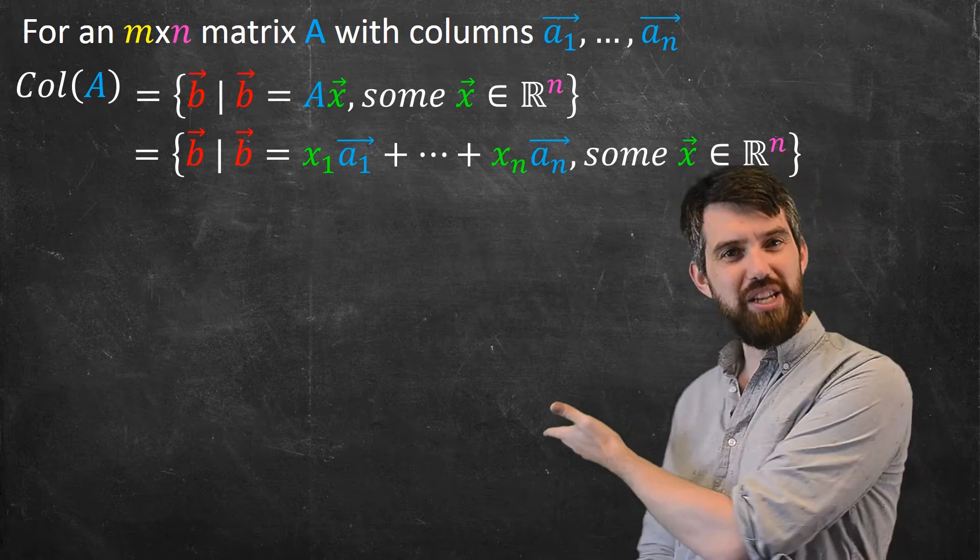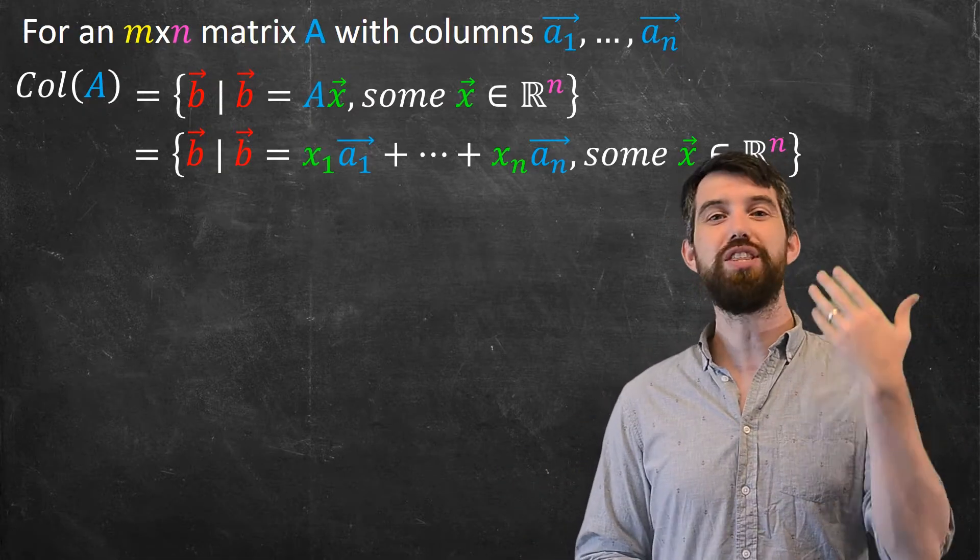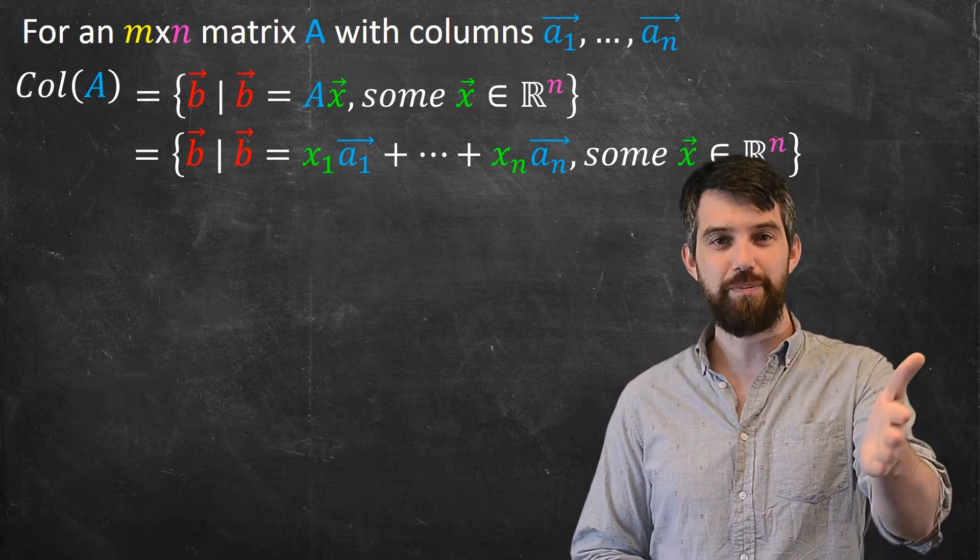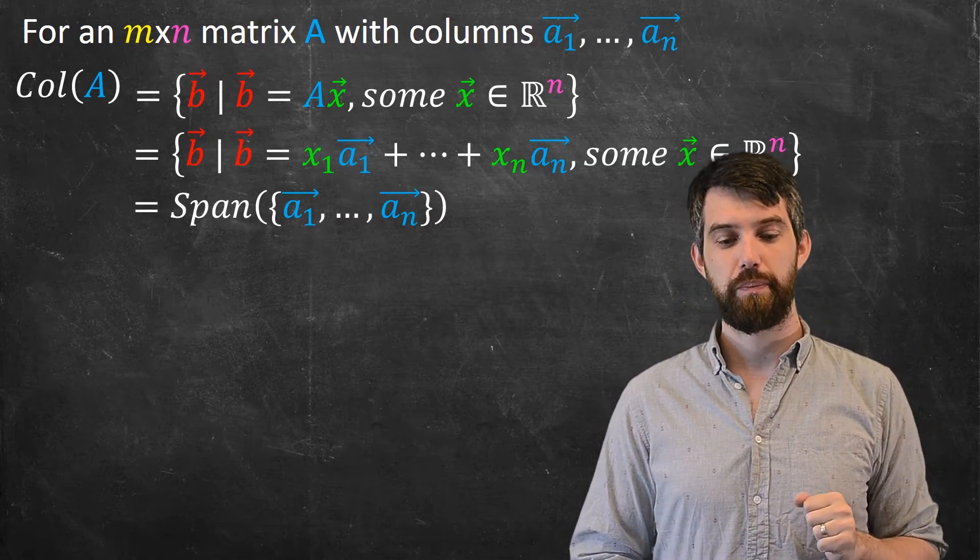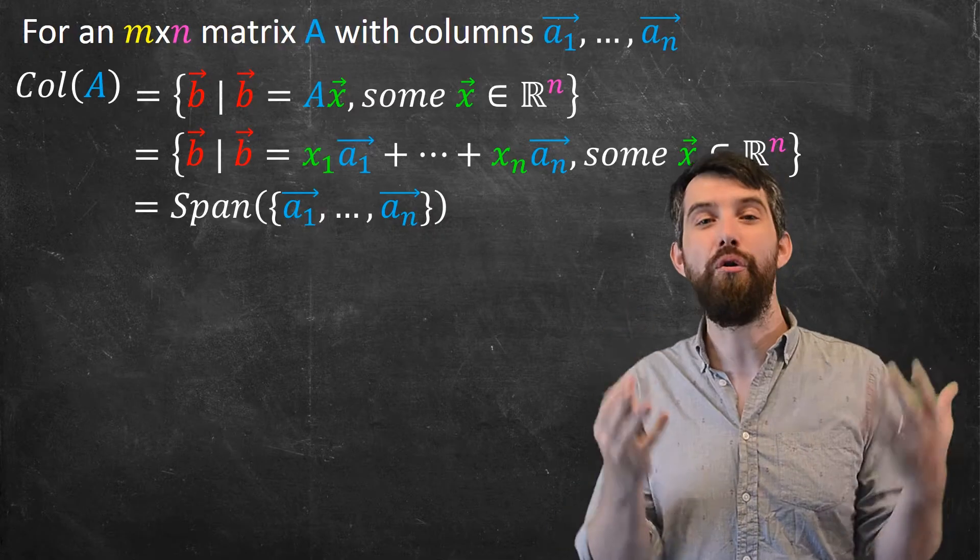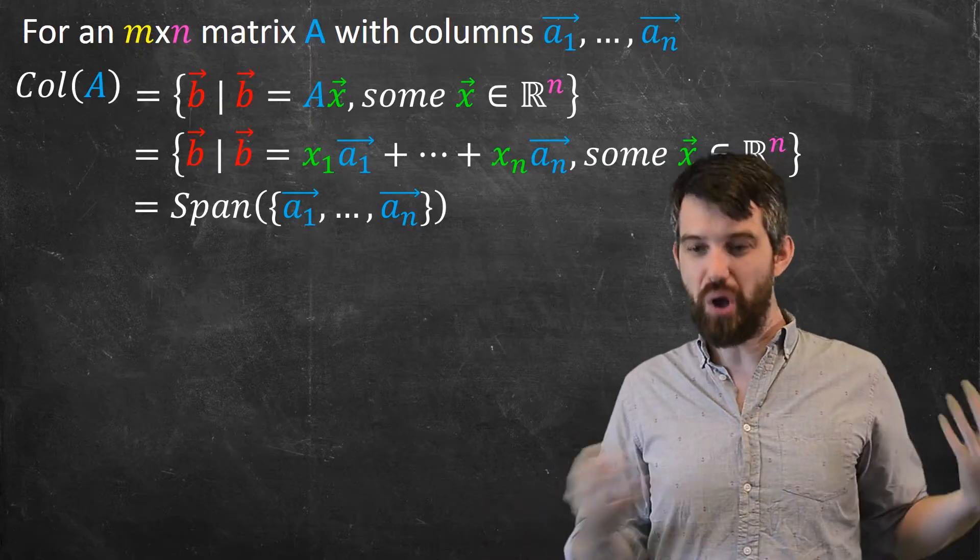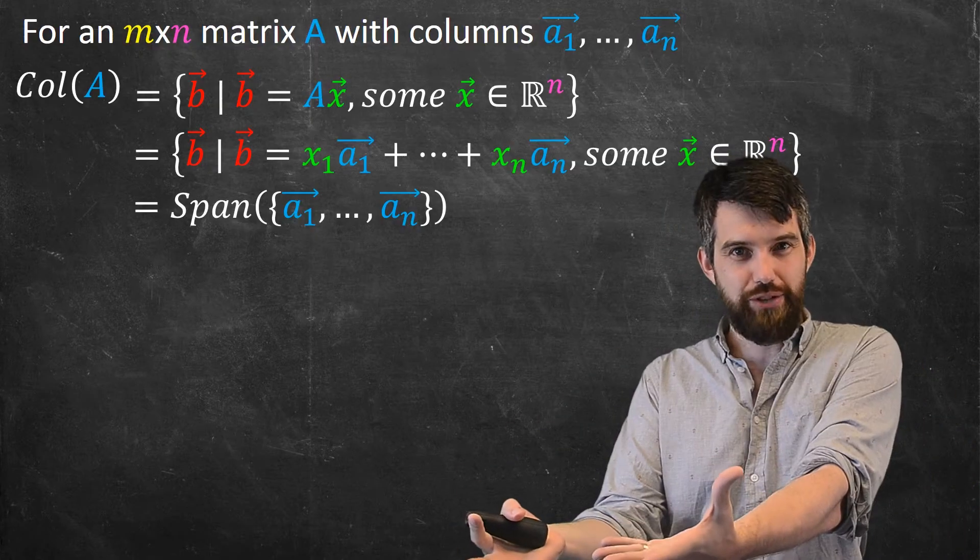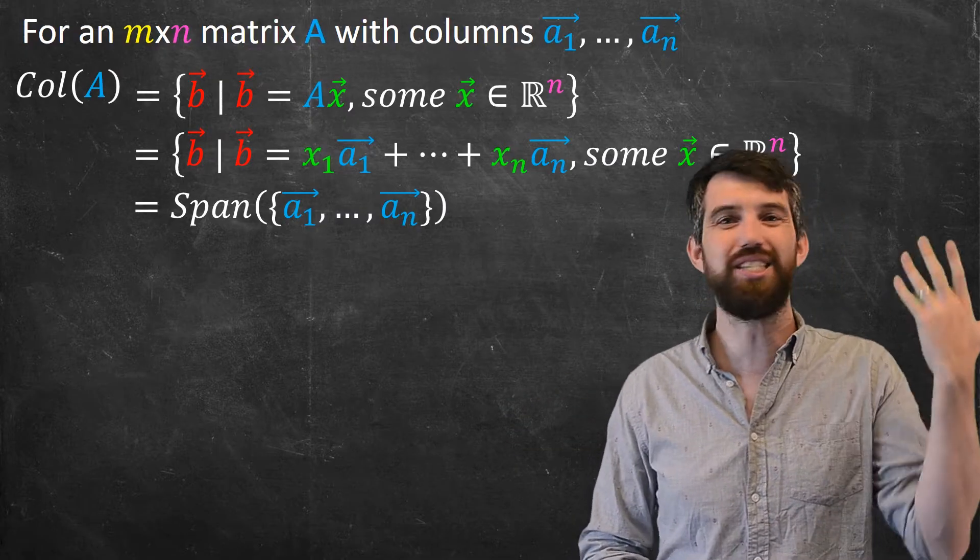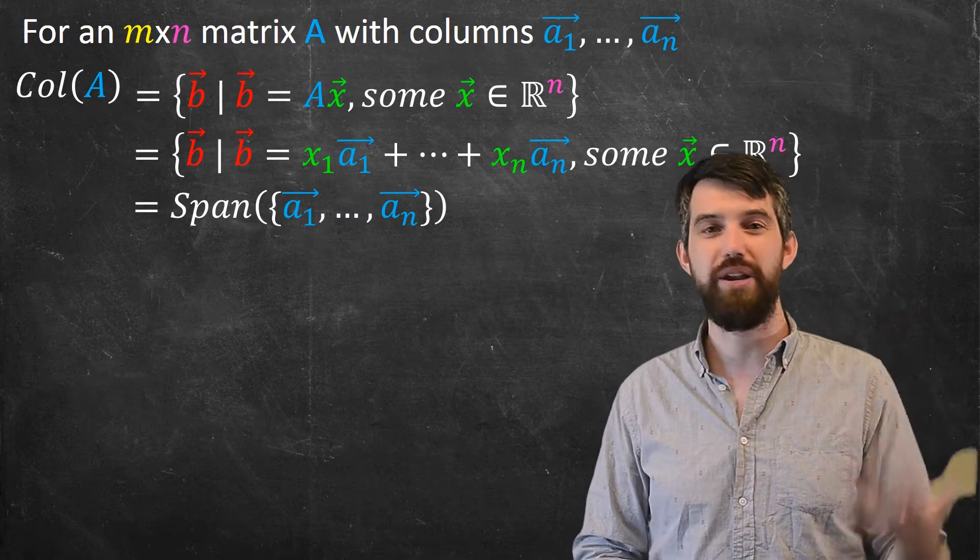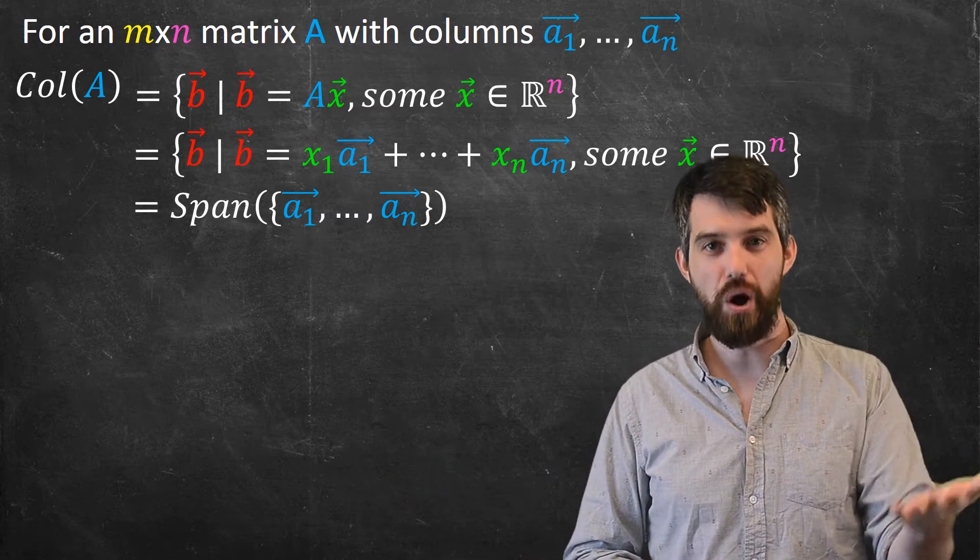But this we've seen before. Saying all the vectors that are linear combinations of some list, that was just the definition of the span. So this is just going to be the span of that list of vectors. And this is why I called it the column space in the first place. The sort of thing I was interested in was all of the targets, the sort of range of this transformation. But when you try to go and write down what that is in a linear transformation, what you get is just the span of the columns of the matrix A. And so indeed the set of targets is going to just be called the column space.